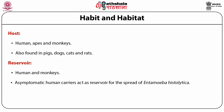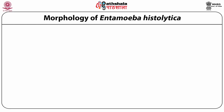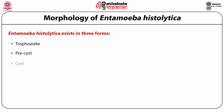Asymptomatic human carriers basically act as reservoirs for the spread of Entamoeba histolytica, and there are no animal reservoirs for this parasite. Regarding morphology, Entamoeba histolytica can exist in three forms: trophozoite, precyst, and cyst.